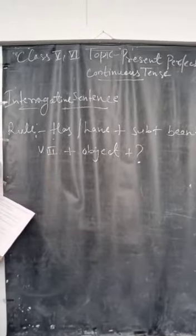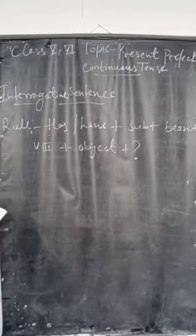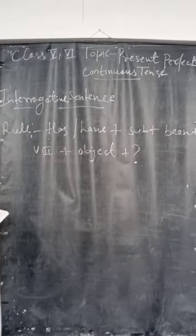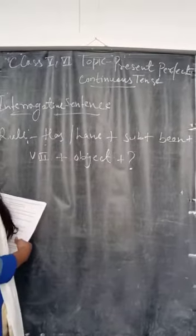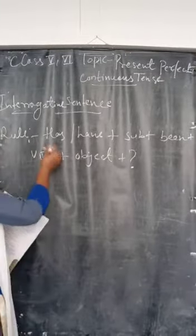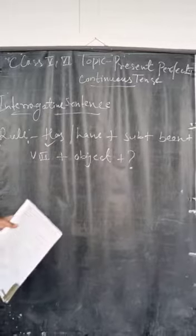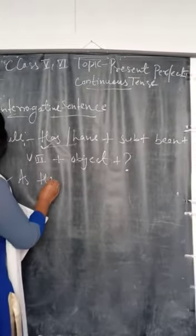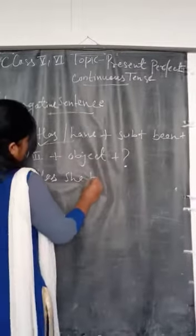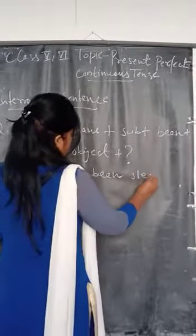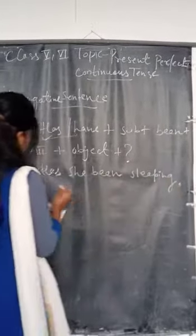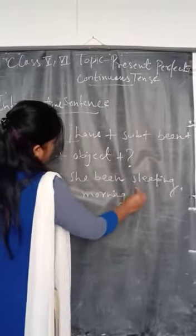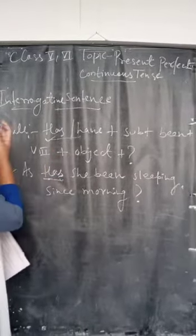Let's start with the interrogative sentence beginning with a helping word — a yes or no question. For example: 'Has he been sleeping since...?' followed by a question mark. This is the sentence form beginning with a helping word.